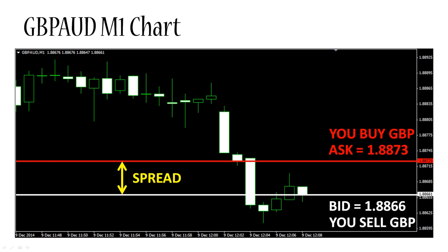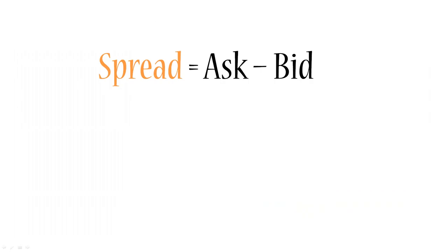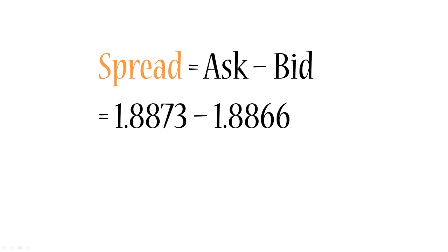For the British pound Australian dollar currency pair, when the prices were as they're illustrated on this chart — the spread is the ask minus the bid. That means 1.8873 minus 1.8866, which equals 0.0007. So that means less than one Australian cent.